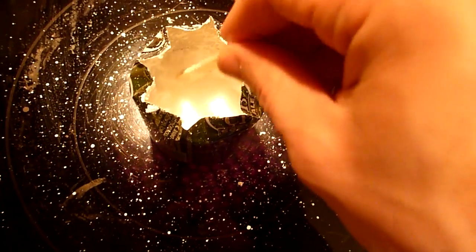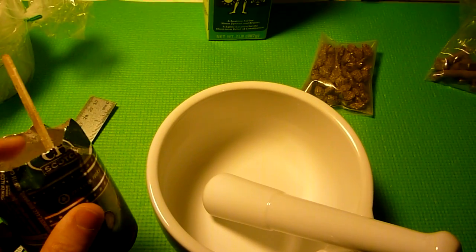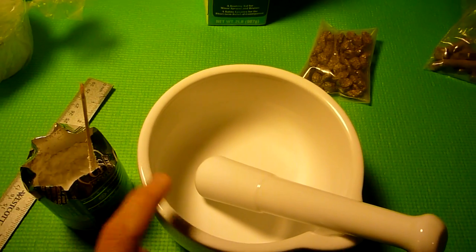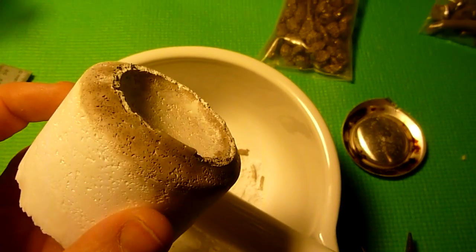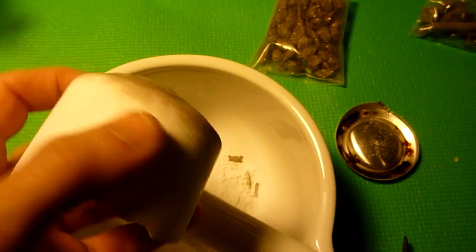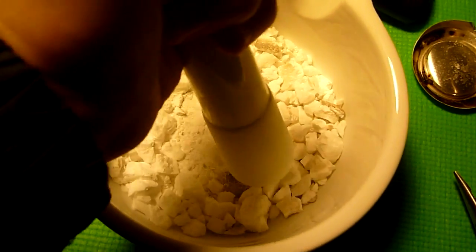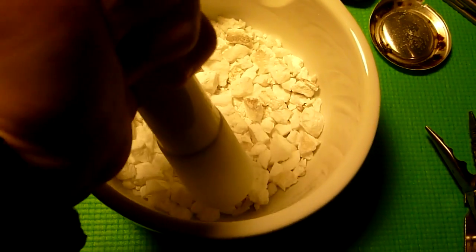Once your Epsom salt cools, extract it from the can and grind it into a fine powder. I'm going to use this mortar and pestle to do that. This is reduced Epsom salt with the can removed. Keep working at your crystals until you get a fine powder. This might take a while.